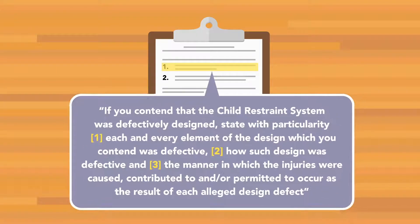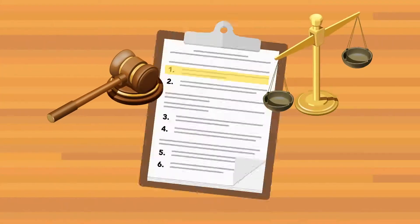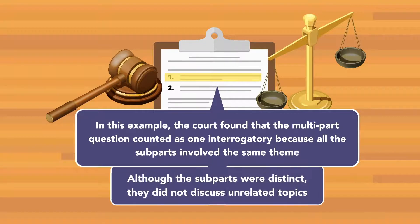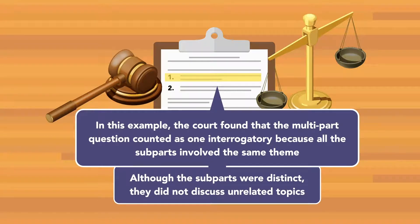For example, assume the following interrogatory: If you contend that the child restraint system was defectively designed, state with particularity — one, each and every element of the design which you contend was defective; two, how such design was defective; and three, the manner in which the injuries were caused, contributed to, or permitted to occur as the result of each alleged design defect. In this example, the court found that the multi-part question counted as one interrogatory because all the subparts involved the same theme. Although the subparts were distinct, they did not discuss unrelated topics.